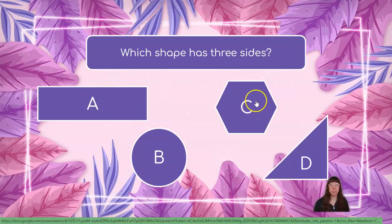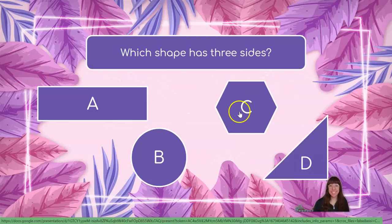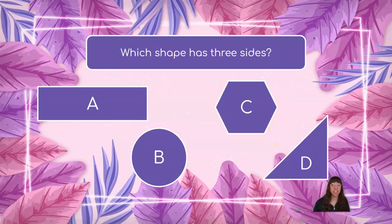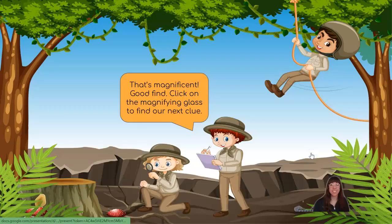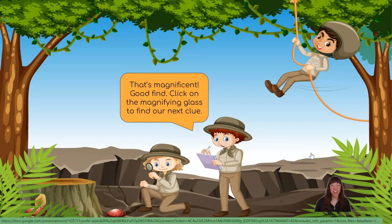Let's count shape C: one, two, three, four, five, six. Shape C has six sides. That's still too many. Let's try shape D: one, two, three. Shape D has three sides. That makes it a triangle. That's magnificent! Good find!